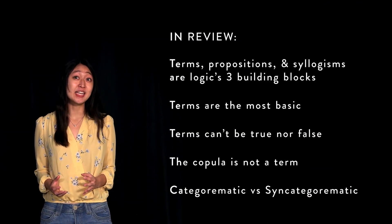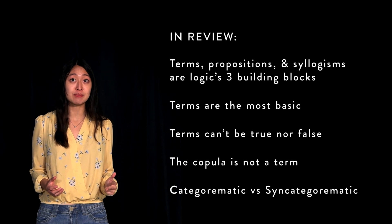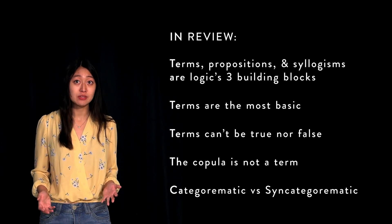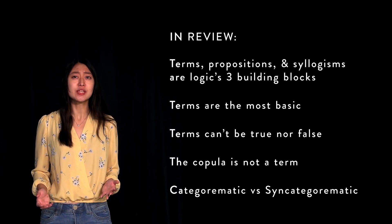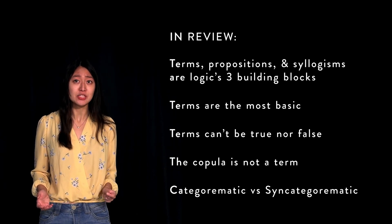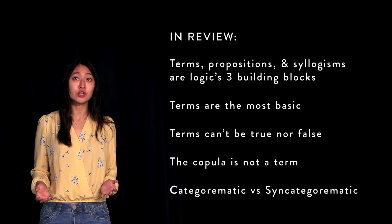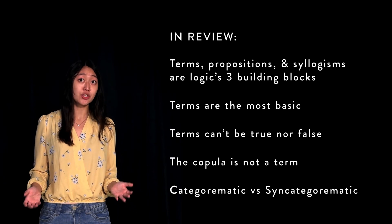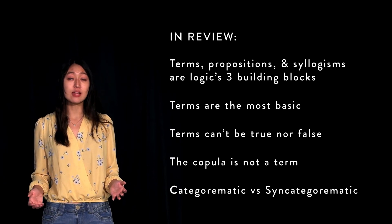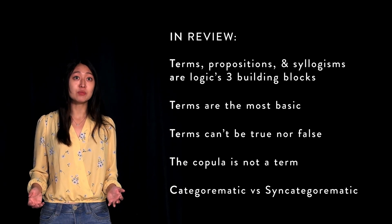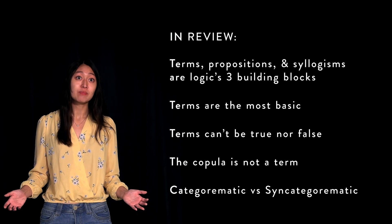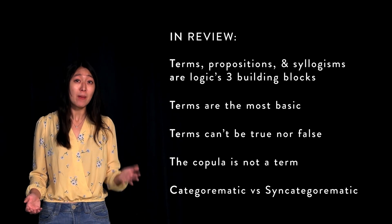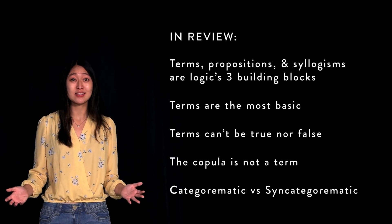The three fundamental building blocks of Aristotelian logic are terms, propositions, and syllogisms. Each of these has its own function and specific set of properties. In this lesson, we have looked at terms — the most basic building blocks. In order to think and argue logically, we must fully understand and master the use of terms. We discussed how terms cannot be true or false, and that being able to assign truth or falsity is an easy way to show that something is not a term. Additionally, the copula is not considered to be a term. Finally, we made a distinction between categorematic and syncategorematic terms on the basis of understanding what a category is. In the following lessons, we will take a closer look at propositions and syllogisms. Thanks so much for watching.